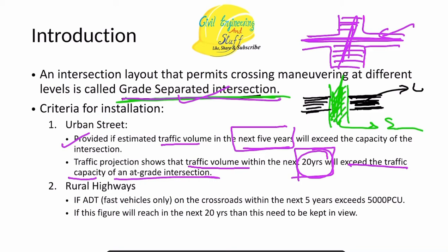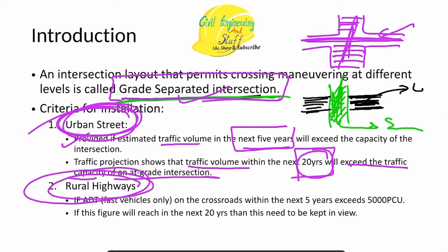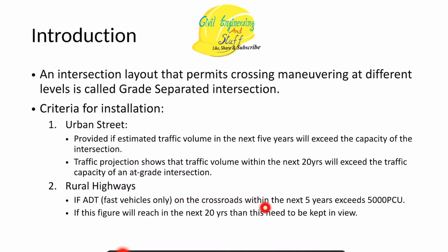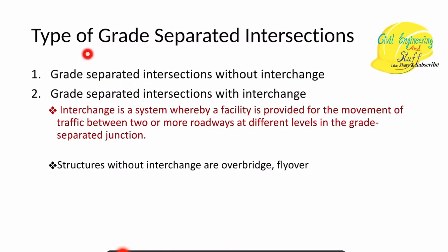Future planning must be taken into consideration when deciding on grade separated intersections in urban areas. In rural areas, if the average daily traffic on the road within the next 5 years exceeds 5,000, or if the 20-year projection exceeds that capacity by a much higher margin, we go for grade separated intersection. These are the general provisions considered when deciding whether to construct one.